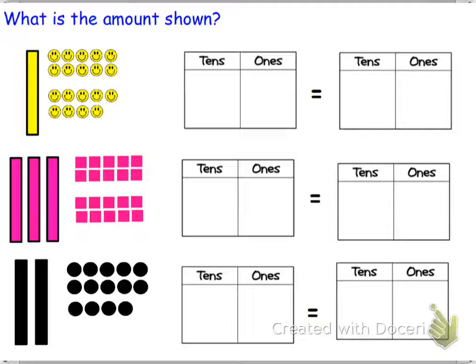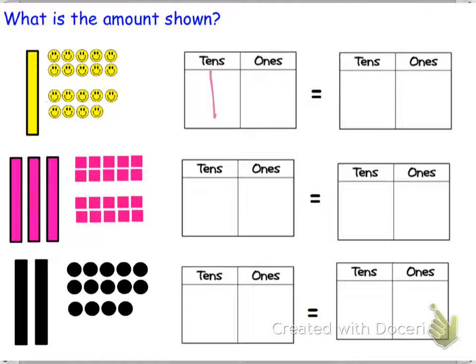So looking at this, we have our pictures. We're going to be looking at each picture and writing how many tens and ones there are. So looking at this, we know there's one ten, and then there's one, two, three, four, five, six, seven, eight, nine, ten, eleven, twelve, thirteen, fourteen, fifteen, sixteen, seventeen, eighteen, nineteen ones.